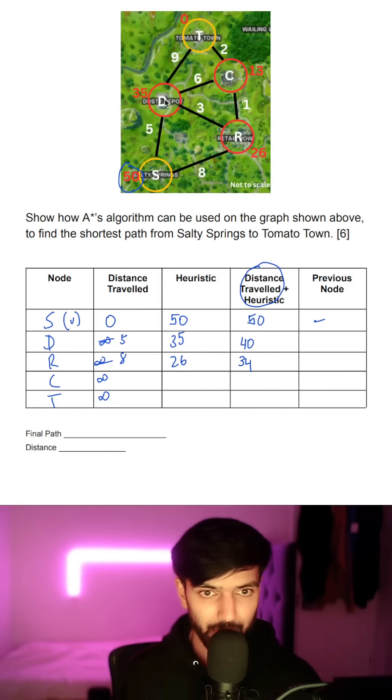We look at its children which is D. Distance of D is 11 but we already got a value for D which is 5 which is less than 11. So we don't look at that.